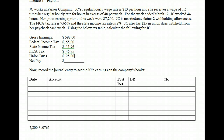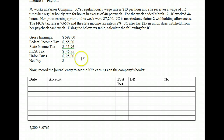Another example is a 401K. The employer doesn't benefit from the 401K you contribute to, so they take the funds out of your paycheck, record it as a payable, and pay it to the 401K sponsor. Voluntary deductions are simply pass-throughs for the employer — we withhold them to be paid to their respective parties. Now we just need to get the net pay. To get net pay, you take the gross pay of $598 and subtract out all the taxes: $598 minus $55 minus $11.96 minus $45.75 minus $25 in voluntary deductions gives us $460.29.